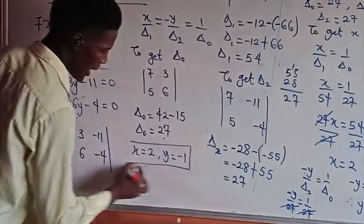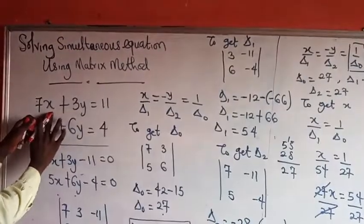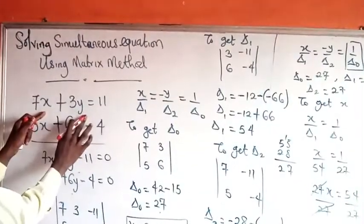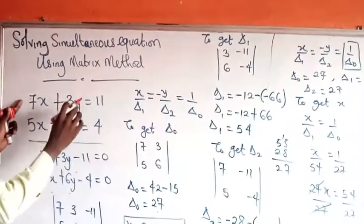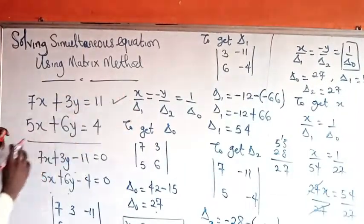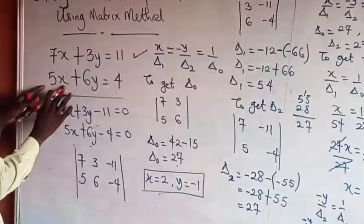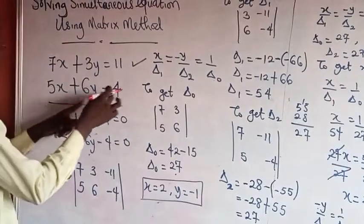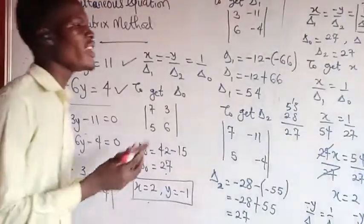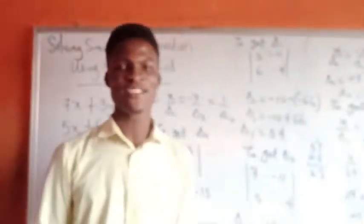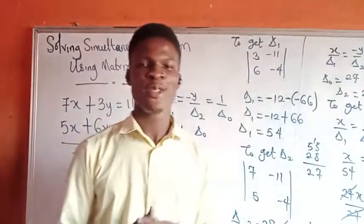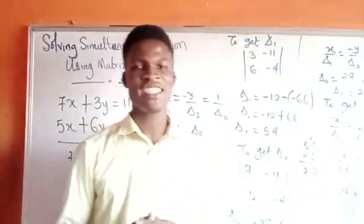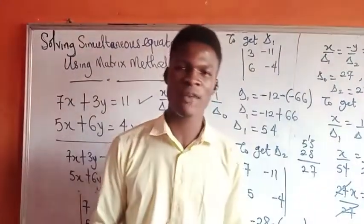Now let's check if our answers are correct. 7 times 2 gives 14, 3 times minus 1 gives minus 3, and 14 minus 3 equals 11. Correct. Let's check the other: 5 times 2 is 10, 6 times minus 1 is minus 6, and 10 minus 6 equals 4. Correct. So this is the way to use the matrix method to find simultaneous equations. I'm sure you enjoyed the video. Don't forget to give us a thumbs up, like and share this video. Thank you very much and do have a great day.